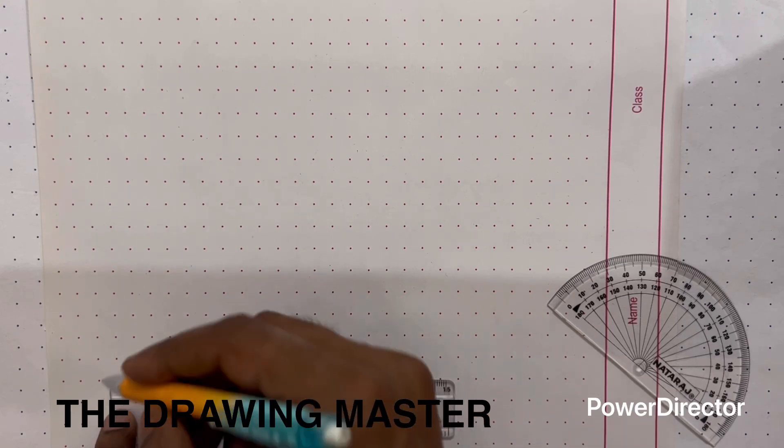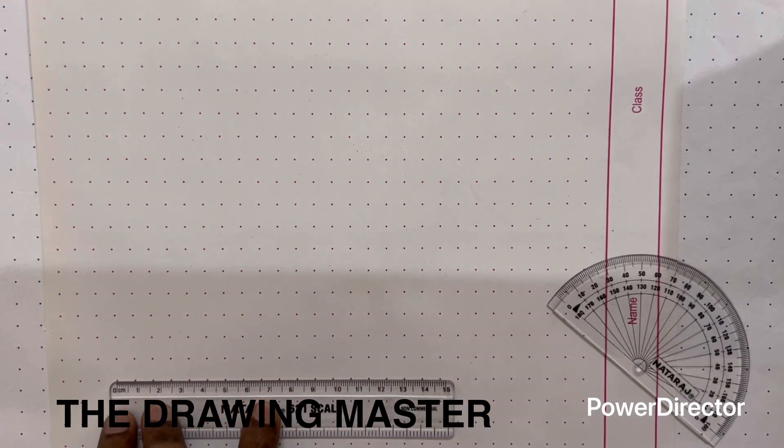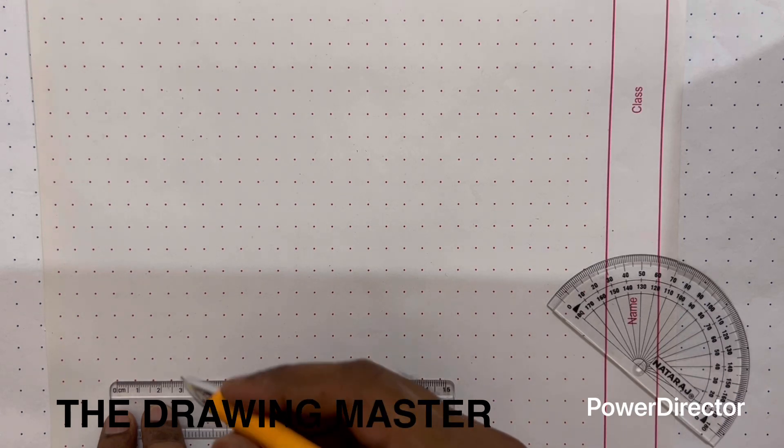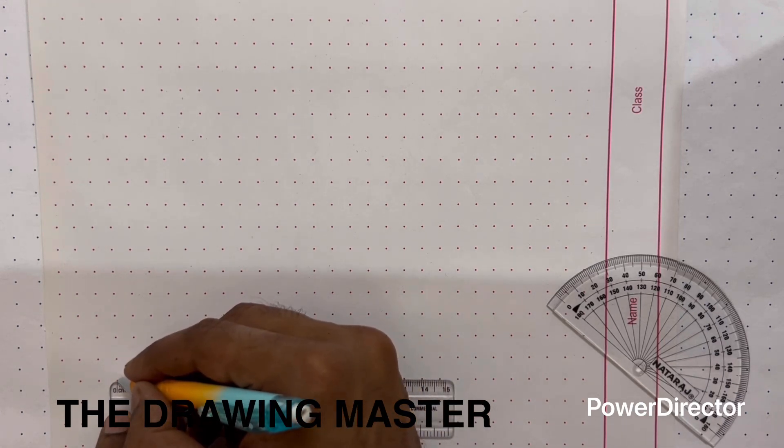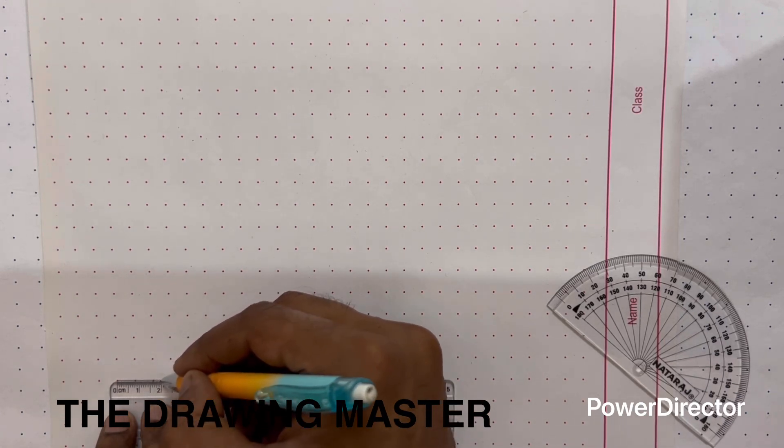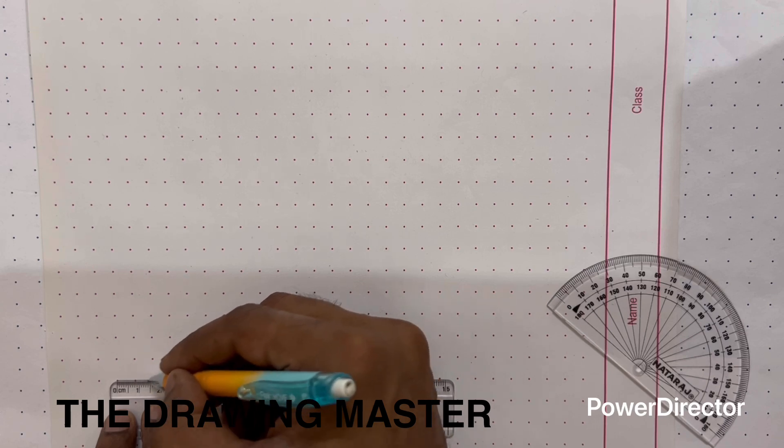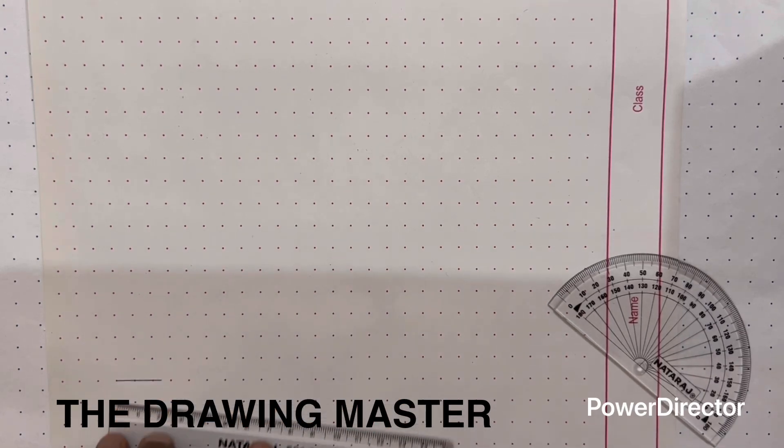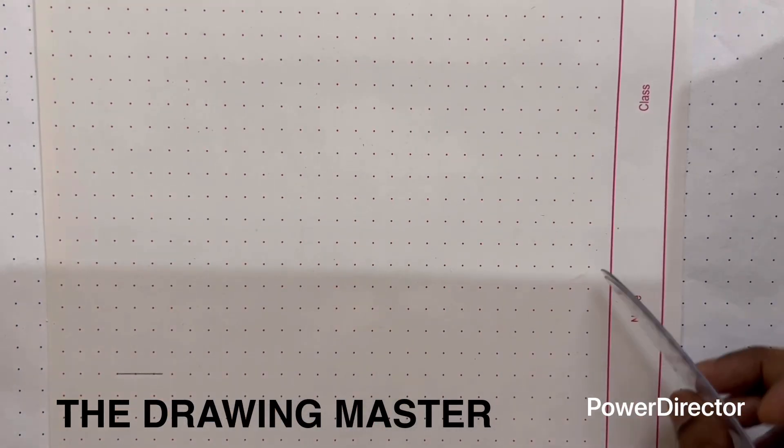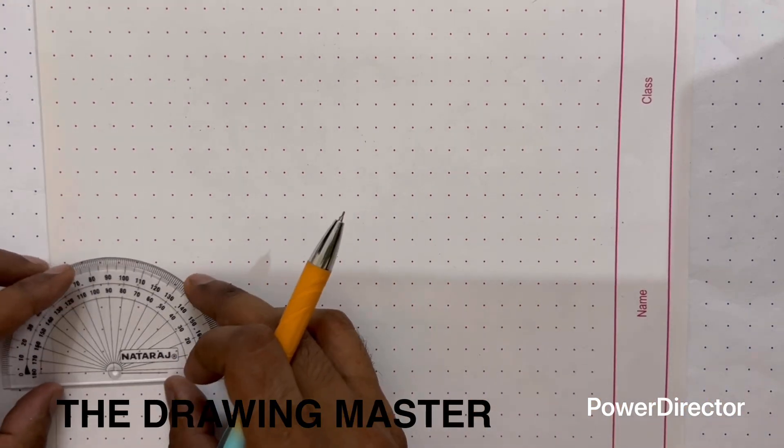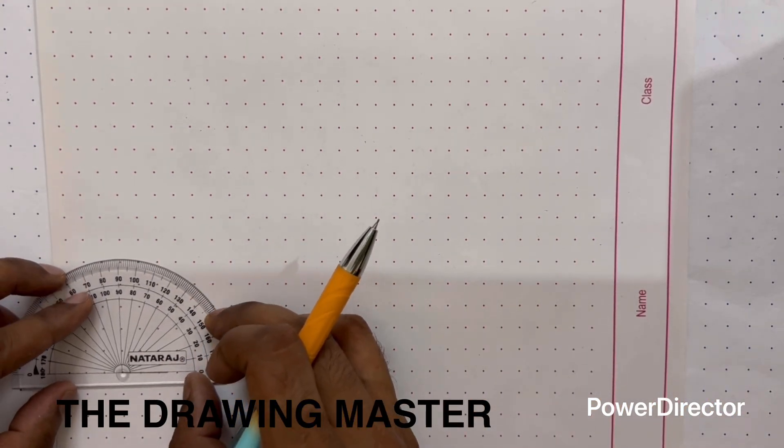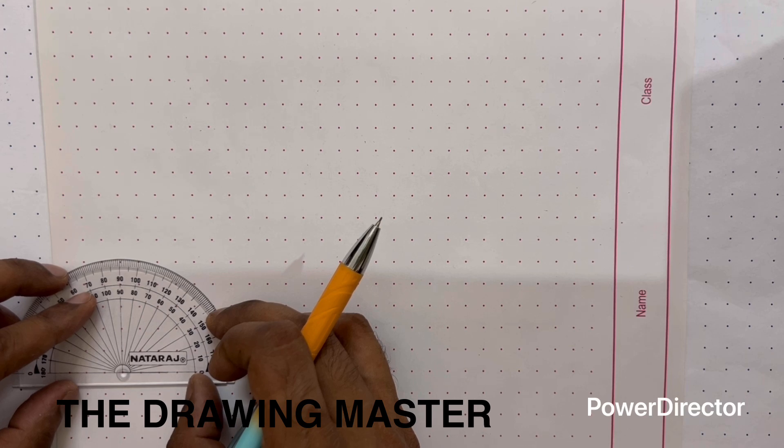So as per the statement, the base edge of this prism is given as 20 mm. So first we will draw the base edge 20 mm. So you know what is the internal angle between two edges of a pentagon? It is 108.